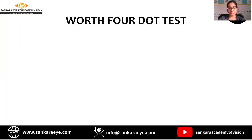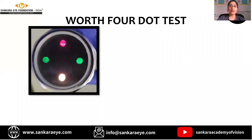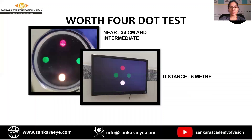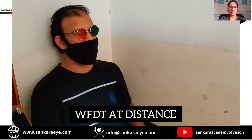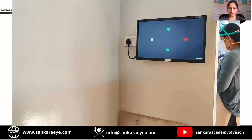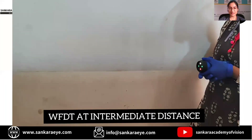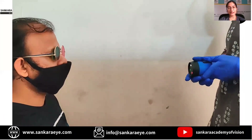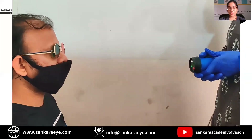Coming to tests for abnormal retinal correspondence and suppression, two of the most commonly done tests are the Worth four dot test and Bagolini striated glasses. The Worth four dot test consists of four illuminated dots of which one is red, two are green, and the fourth one is white. The patient wears red-green goggles for this test. The near Worth four dot test is done at 33 centimeters, the intermediate test at 67 centimeters, and the distance Worth four dot test at 6 meters. Ask the patient how many dots they can see. The test is repeated at intermediate and near distances, with near correction worn for the near distance. This test can be done in normal room illumination or in a dark room, and it is more dissociating in the dark room.